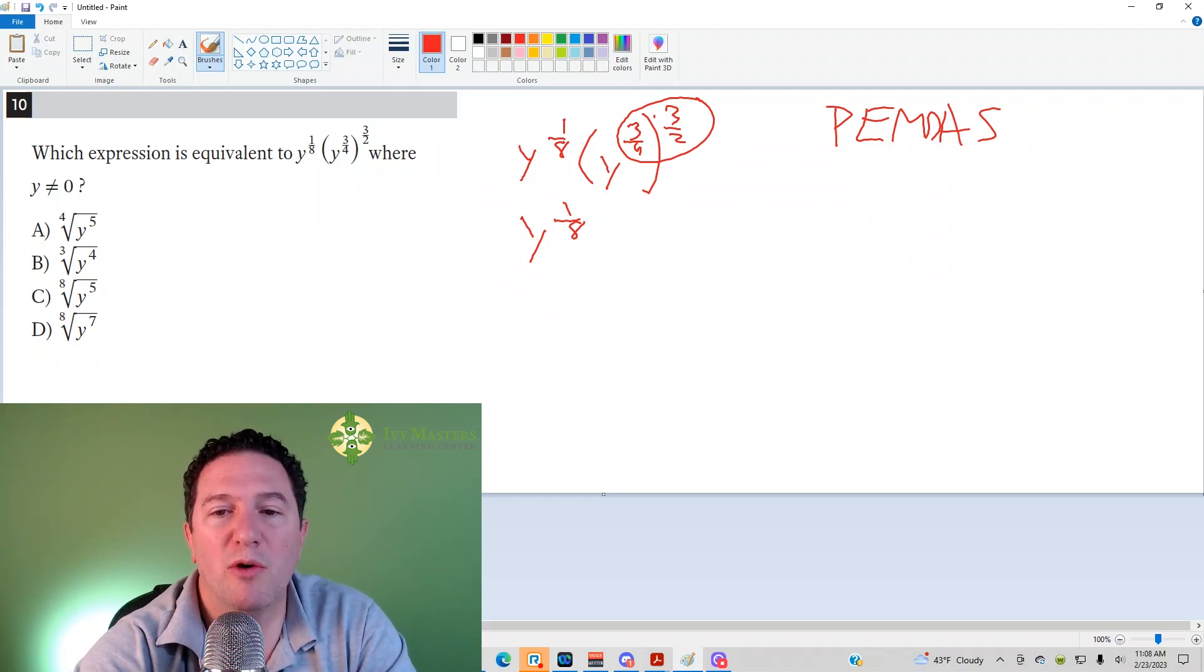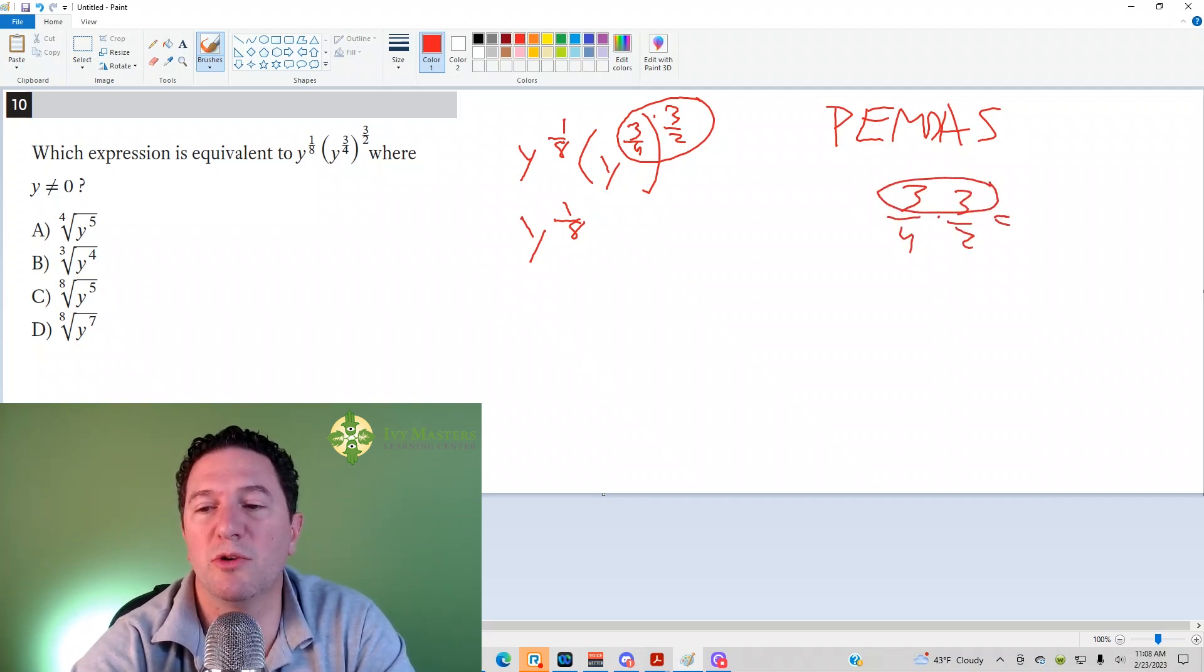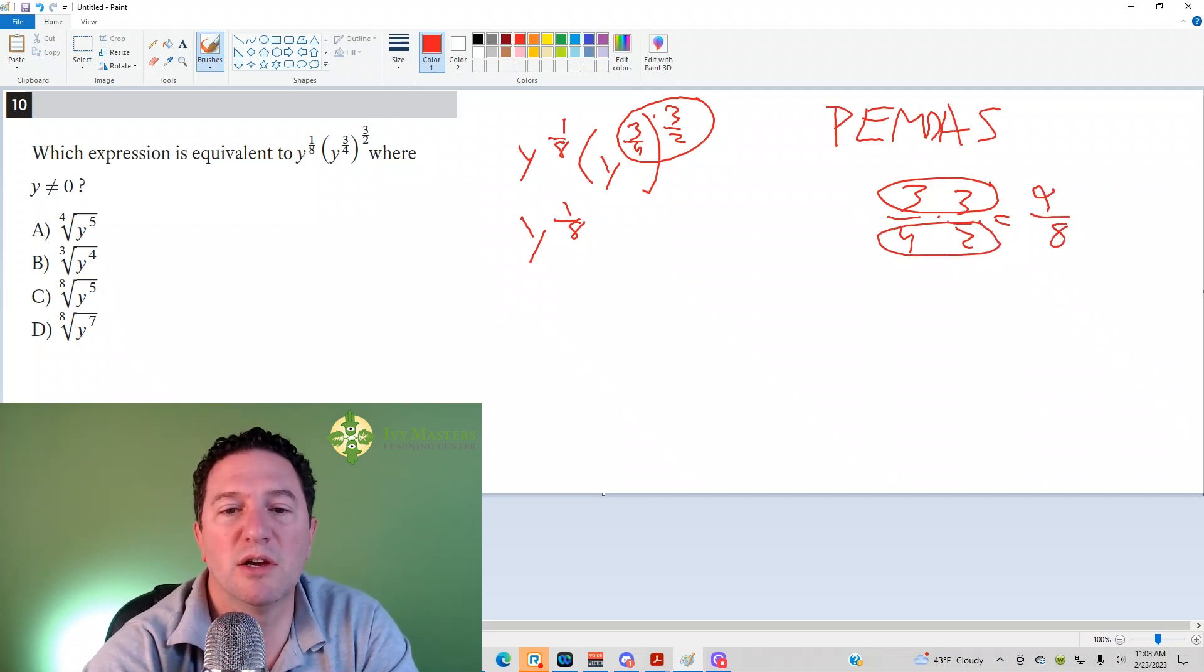But y to the 1 eighth power, when I multiply those, when you multiply 3 over 4 times 3 over 2, remember your multiplication rules. You multiply the top together, you get 9, you multiply the bottom together, you get 8. So it's y to the 1 eighth times y to the 9 over 8.